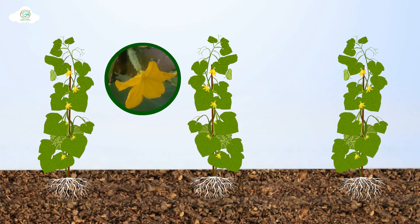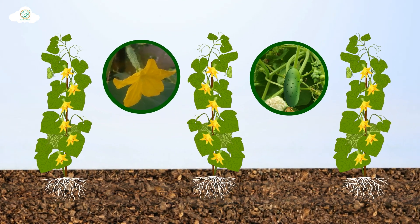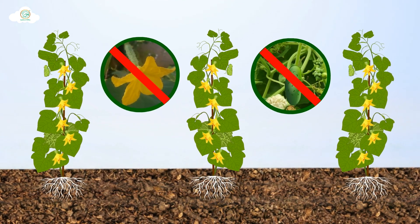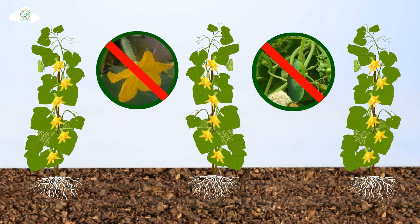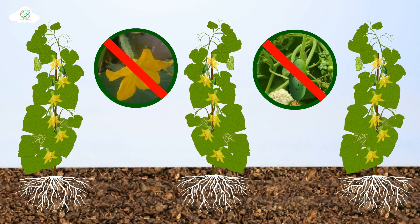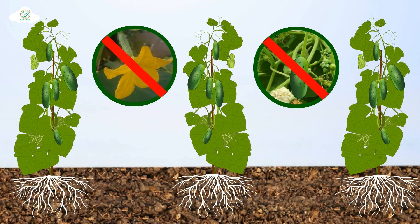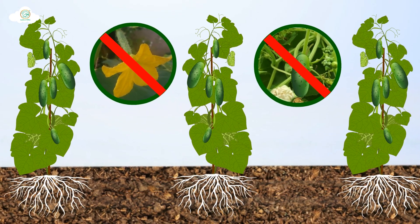As a result, uniform flowering occurs, as well as reduced problems such as blossom and fruit drop, and increased production.